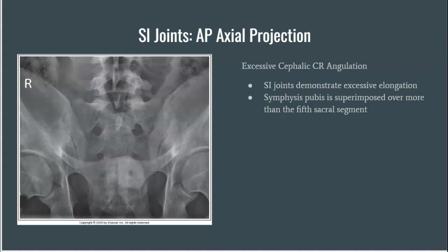When looking at this image, we can see there is way too much angulation. The pubic symphysis is way over top of the sacral segment — almost to the midpoint of the sacrum, around the third, almost up to the second sacral segment. This is excessive cephalic central ray angulation; you would just need to readjust the central ray angulation to obtain the appropriate projection.